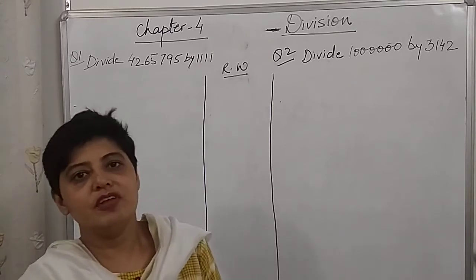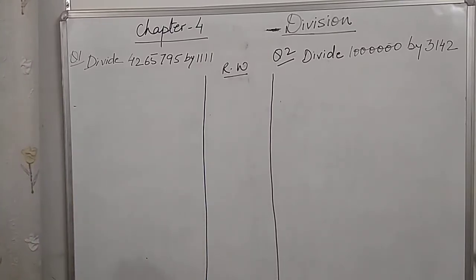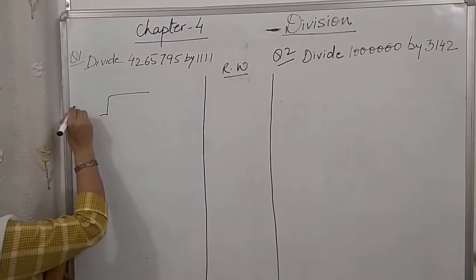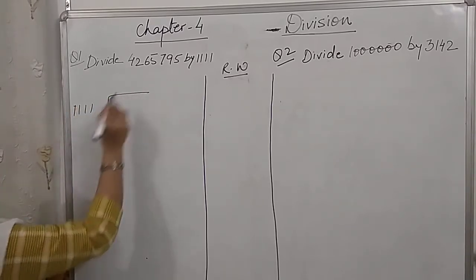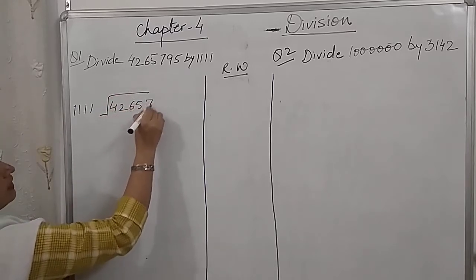Hello children, today we will be doing more sums with the 4 digit divisor. Now let's take the first question. Divisor is 1111 and the dividend is 4265795.